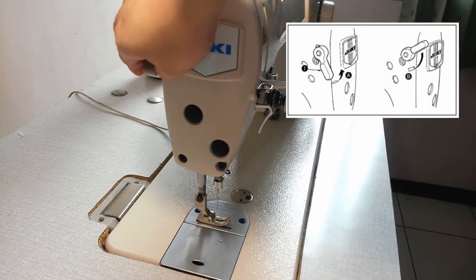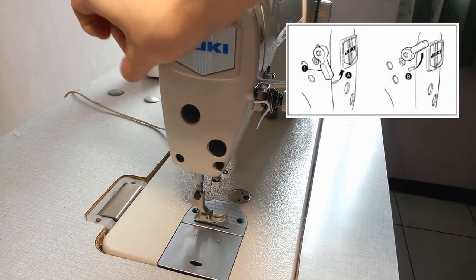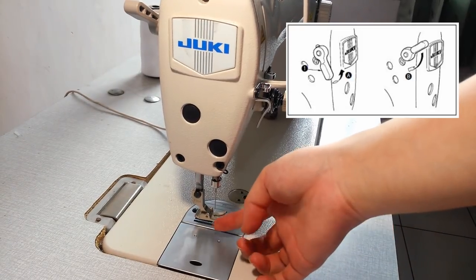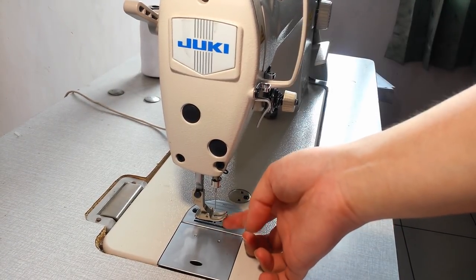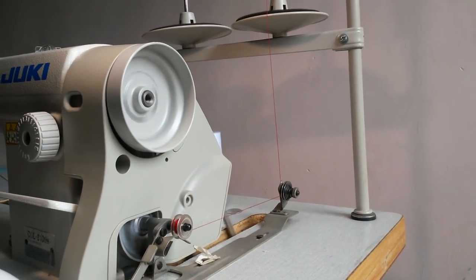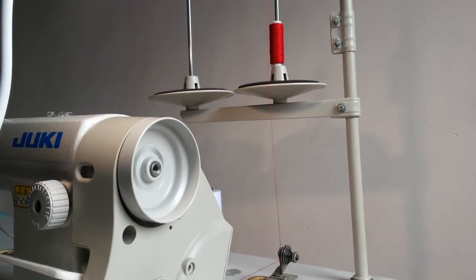Before we start winding the bobbin, make sure the footer is lifted up. This step is to avoid the footer colliding with the feed dogs. After that, turn on the machine, press the foot pedal, and the winding will start.